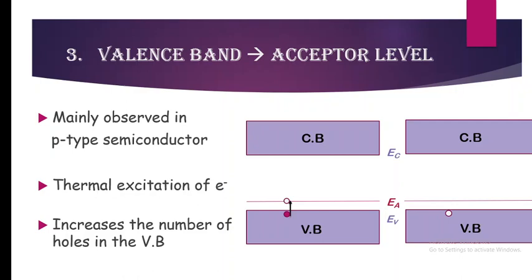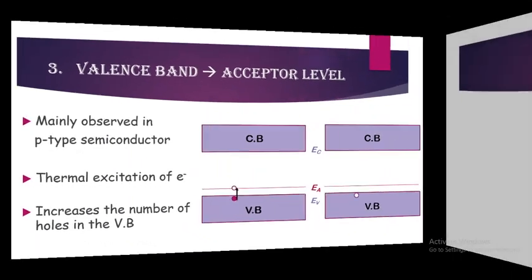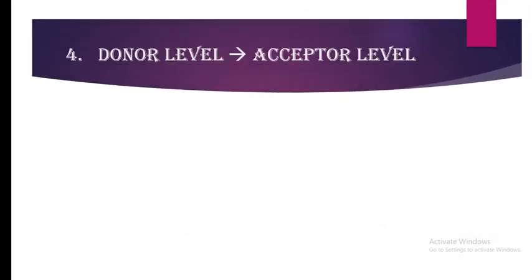The transition is of the electron but it leaves behind a hole, and that's why this type of transition is mainly observed in P-type semiconductors, where holes are the majority charge carriers. This is the third type of transition.